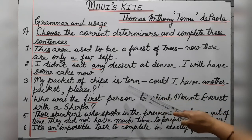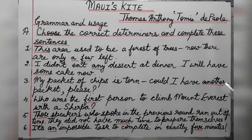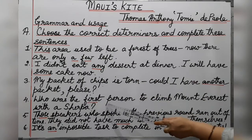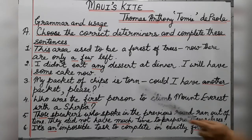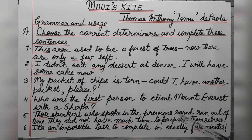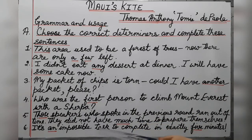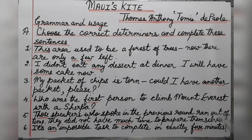Number three: 'My packet of chips is torn. Could I have another packet please?' Here 'another' is the determiner before the noun 'packet.' Number four: 'Who was the first person to climb Mount Everest with a sherpa?' using the determiner 'first.' Number five: 'Those speakers who spoke in the previous round ran out of time. They did not have much time to prepare themselves,' using 'those' and 'much.' Finally: 'It's an impossible task to complete in exactly five minutes,' using 'an' and 'five' as determiners.